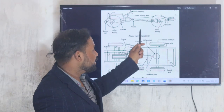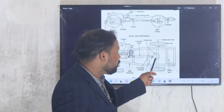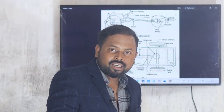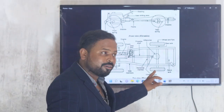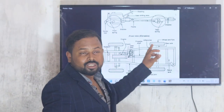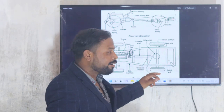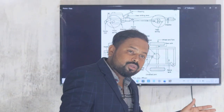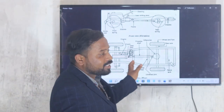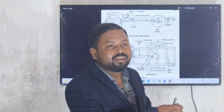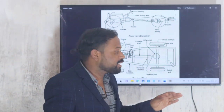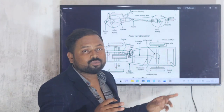The universal joint transfers rotational motion at an angle without any reduction in speed. After the propeller shaft, the next component is the differential. The main function of the differential is to give rotational motion to the rear wheels as per requirement. For example, when turning left, the left wheel receives less rotation and the right wheel receives more rotation. When turning right, the right wheel rotates less compared to the left wheel.